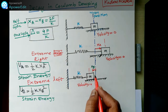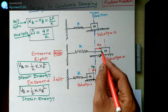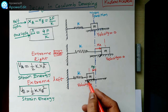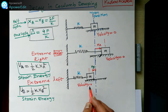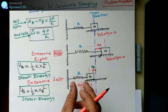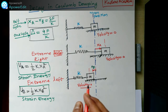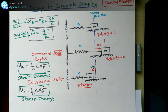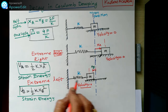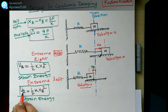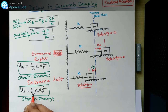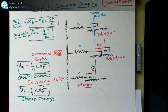Similarly, for the extreme left position the mass travels distance Xb, which is less than Xa — you can also visualize this from the diagram. At the extreme left position the velocity is again zero, the spring is compressed or stretched, and the strain energy there is Ub = ½kXb².